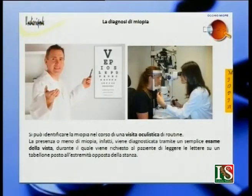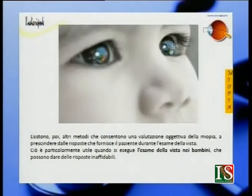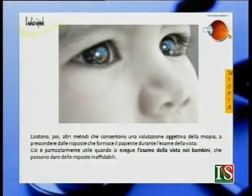Vediamo la diagnosi di miopia. Si può identificare la miopia nel corso di una visita oculistica di routine, tramite un semplice esame della vista durante il quale viene richiesto al paziente di leggere le lettere su un tabellone posto all'estremità opposta della stanza. Esistono poi altri metodi che consentono una valutazione oggettiva della miopia a prescindere dalle risposte del paziente. Ciò è particolarmente utile quando si esegue l'esame nei bambini, che possono dare risposte inaffidabili.